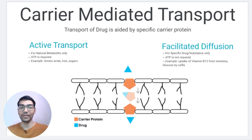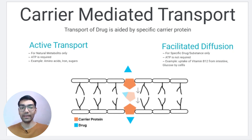The next method of drug transport is carrier-mediated transport. Some drugs or substances cannot be transferred via passive transfer because every drug differs in its chemical properties. They need a special carrier protein to help transfer the drug. The drug first attaches to the carrier protein, which then takes it inside the cell and releases it. This process goes on repeatedly — that's how this mechanism works.